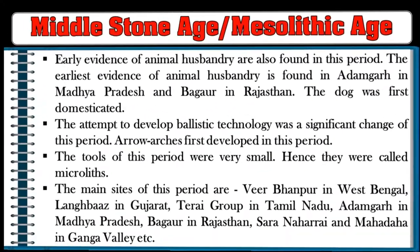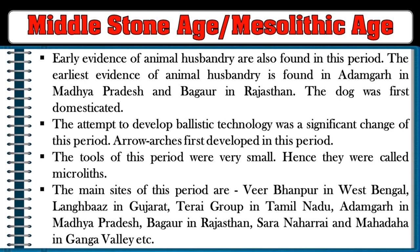The earliest evidence of animal husbandry is found in Adamgarh in Madhya Pradesh and Bagor in Rajasthan, where the dog was first domesticated. The development of ballistic technology was a significant change of this period, with arrow and bow first developing in this age. The tools of this period were very small, hence called microliths.